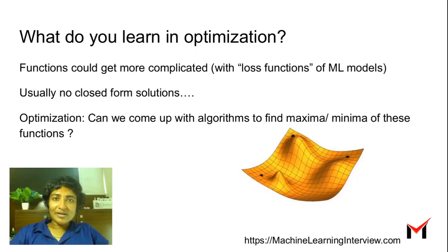But functions can get more complicated, especially when we start writing loss functions in machine learning. Usually there are no simple closed-form solutions from directly equating the derivative to 0. In optimization, we learn how to develop algorithms to find maxima and minima of functions in an efficient and effective way.